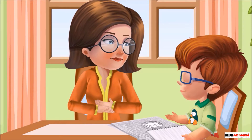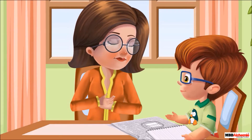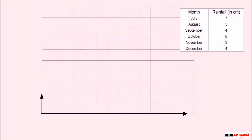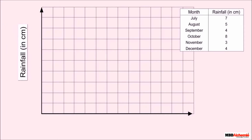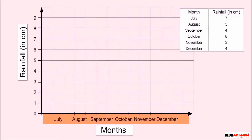His mother replies, "I will explain how to draw a bar graph. Draw a horizontal line and a vertical line on a square paper as shown. We represent the rainfall on the vertical axis. Here, one square box represents one centimeter of rainfall. Similarly, two square boxes will represent two centimeters of rainfall, and so on. We represent the months on the horizontal axis."